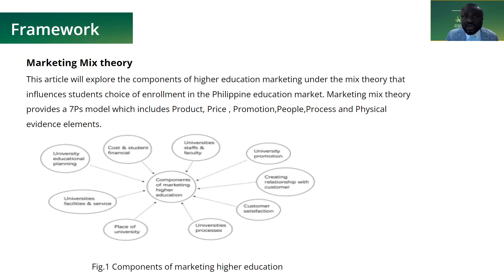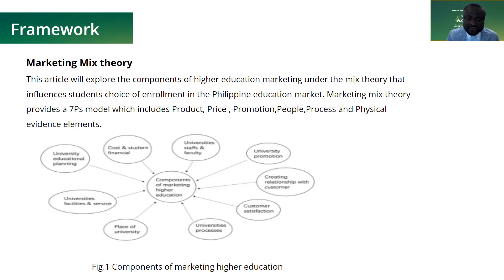This article explores the components of higher educational marketing under the mixed-mode theory that influences students' choice of enrollment in the Philippines — specifically the educational market. The marketing mix theory provides a 7P model, which includes product, price, promotion, people, process, and physical evidence elements. These translate to: university educational planning, cost of student financing, university staff and faculty, university promotion, creating relationships with customers, customer satisfaction, university processing, and the place of universities — all components of marketing higher education.